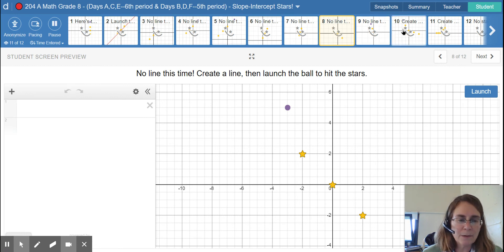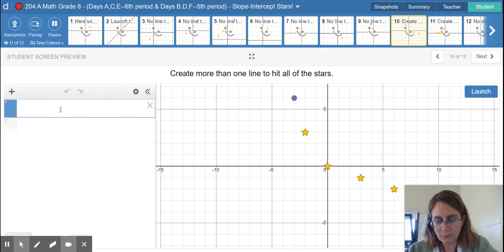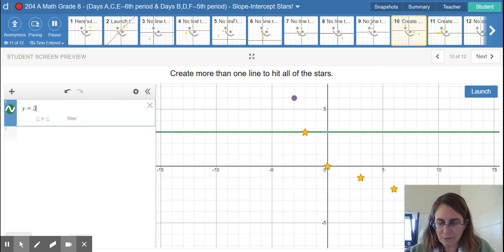When you get to number ten, create more than one line to hit all of the stars. You're going to create a line to hit that star and that star, and then another line to hit these stars. You type your equations in over here, whatever it would be. I'm just going to make one up to show you how to type it in.